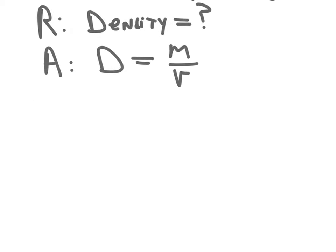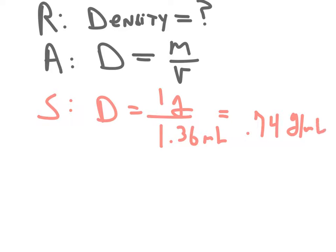Let's go ahead and solve it. Density equals the mass of one gram divided by the volume of 1.36 milliliters. Pump that into your calculator, and you get 0.74 grams per milliliter.